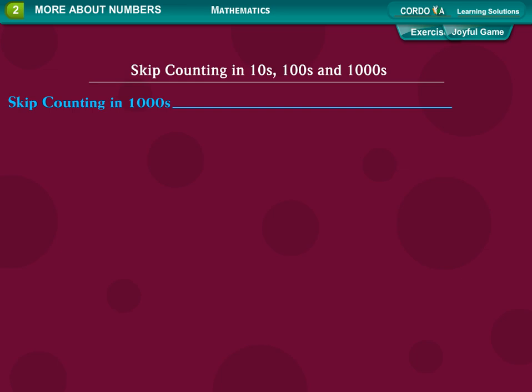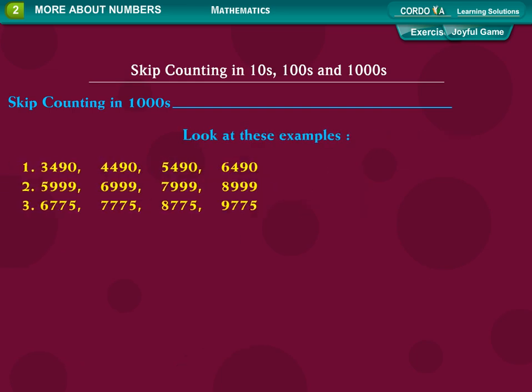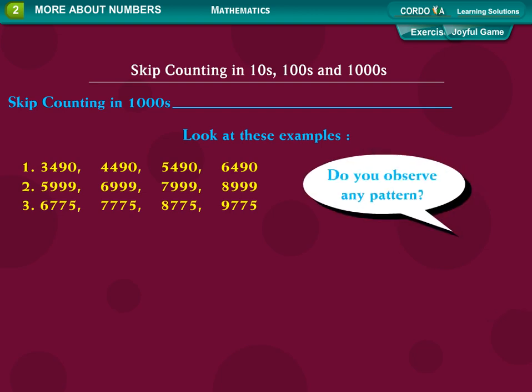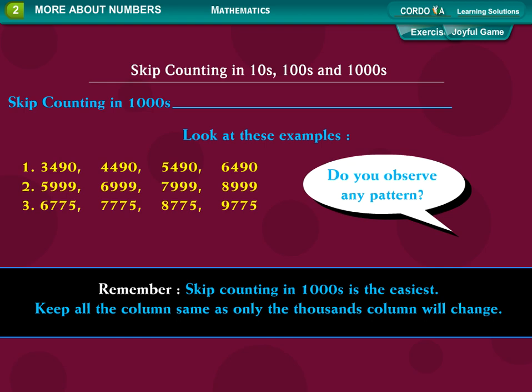Keep counting in one thousands. Look at these examples: 3,490, 4,490, 5,490, 6,490. 5,999, 6,999, 7,999, 8,999. 6,775, 7,775, 8,775, 9,775. Do you observe any pattern? Remember: skip counting in one thousands is the easiest. Keep all the columns same as only the thousands column will change.